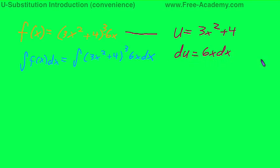And then, after we implicitly differentiate, we get du equals 6x dx. And then I'm going to solve for dx to give me du over 6x.